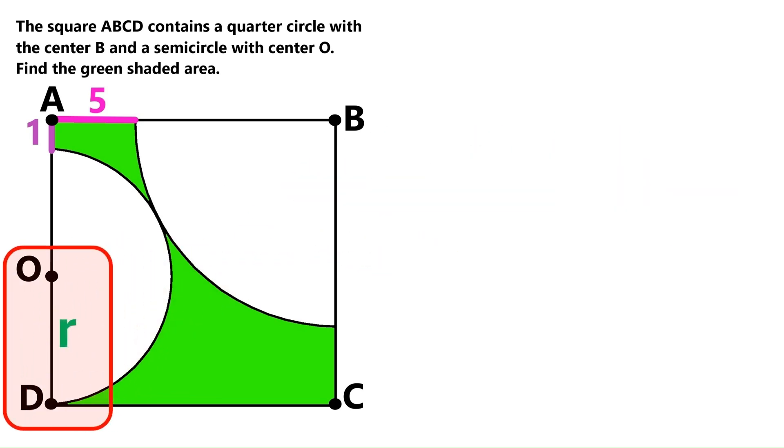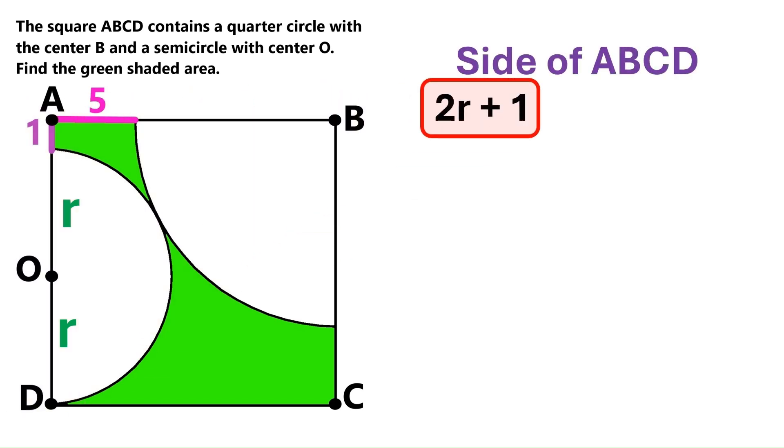Let's call the radius of the semicircle r. And this distance here is also r. Now it turns out the side of the square equals 2r plus 1. Let's put that expression up here. Now let's call the radius of this big quarter circle capital R. If we add this 5 to capital R, we get the side of the square. So let's also write that as an expression up here.